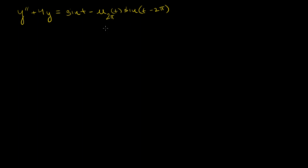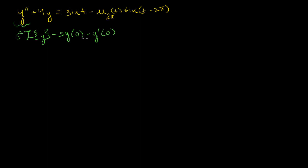We're going to take the Laplace transform of both sides of this equation. The Laplace transform of the left-hand side: the Laplace transform of the second derivative of y is s² times the Laplace transform of y minus s·y(0) minus y'(0), plus 4 times the Laplace transform of y. On the right-hand side, the Laplace transform of sine of t is 1/(s² + 1).